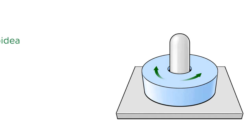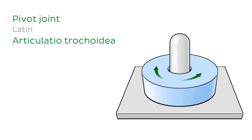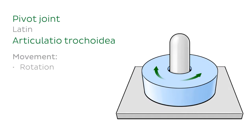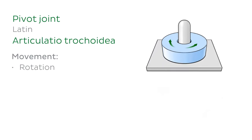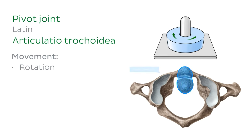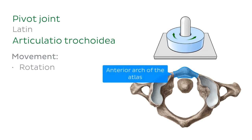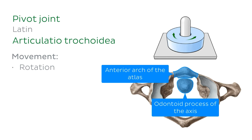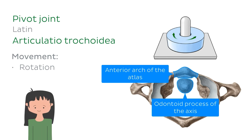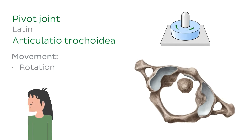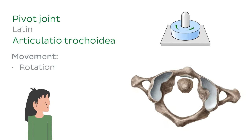Like the hinge joint, the pivot joint is also uniaxial. Pivot joints, also known as rotary joints, allow movement around a single axis — this movement being rotation. The best example of this is the atlantoaxial joint, which occurs between the anterior arch of the atlas and the front of the odontoid process of the axis. The atlantoaxial joint allows you to shake your head when you've had enough.